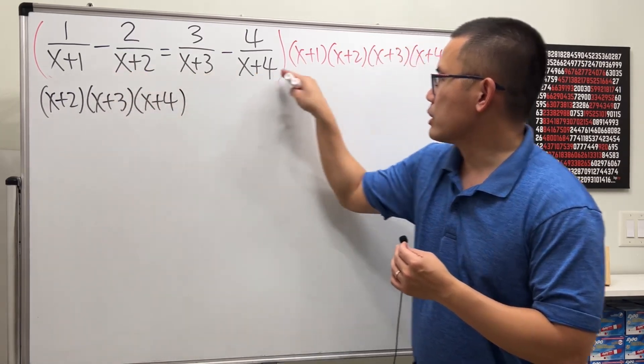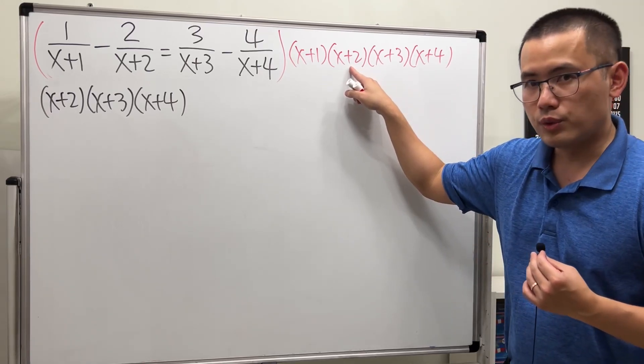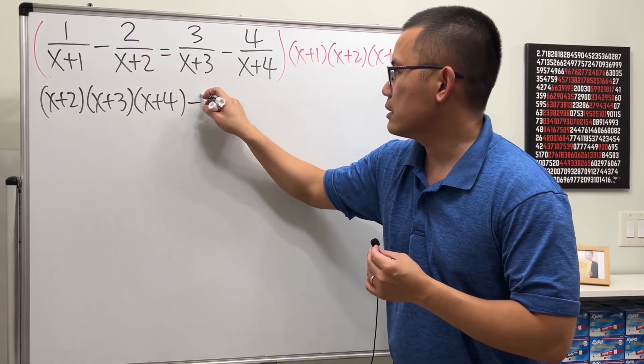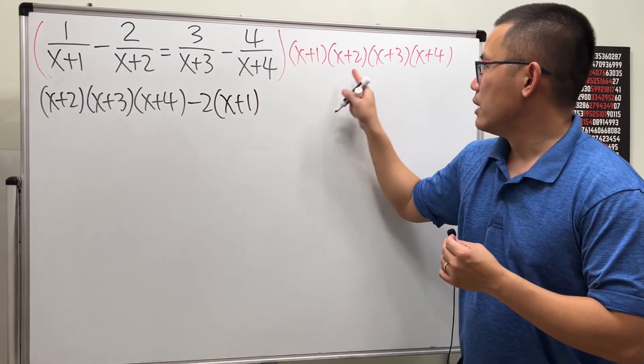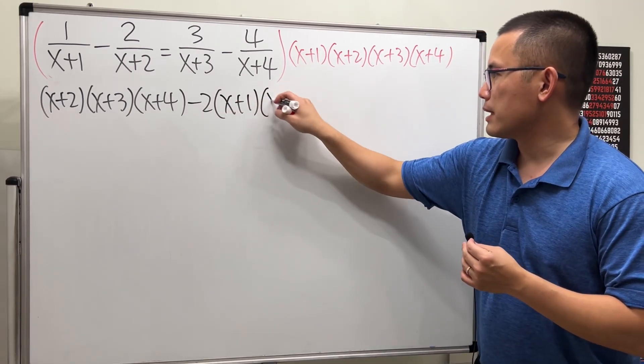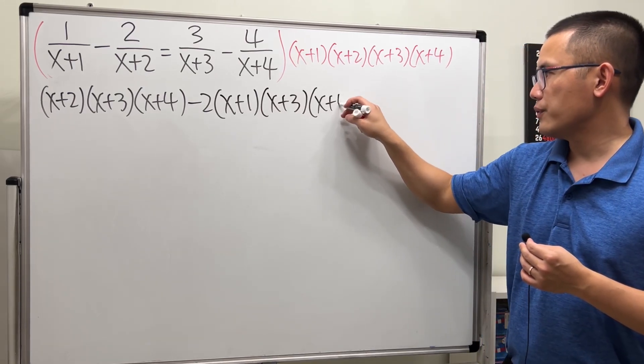Continue. This, multiply with all that, x plus 2 will cancel. We have a minus 2 here and we will just have x plus 1. This is out, so we have x plus 3 and then x plus 4.